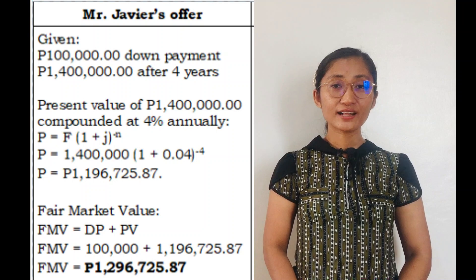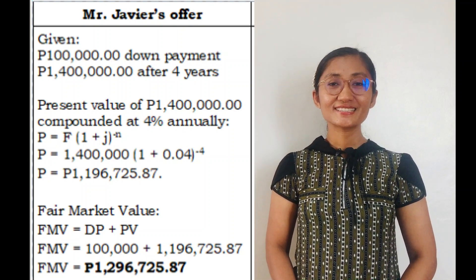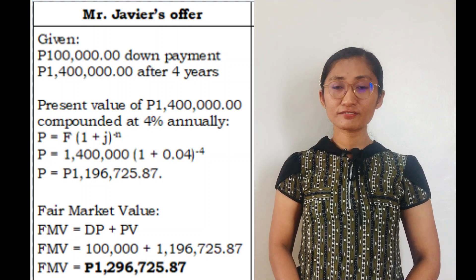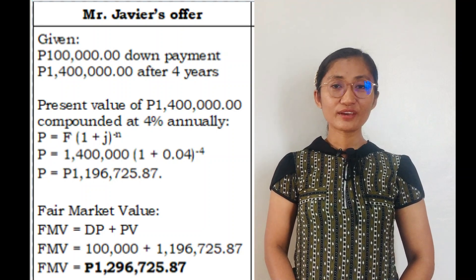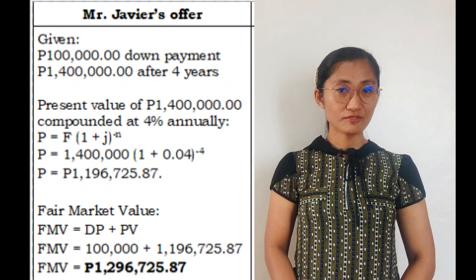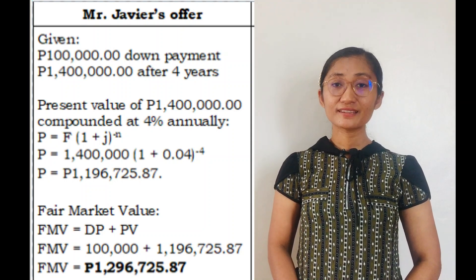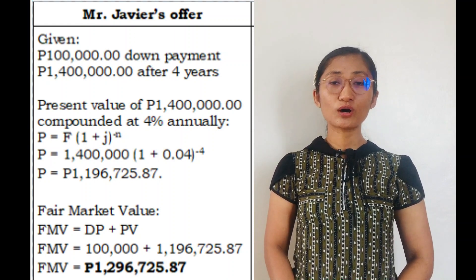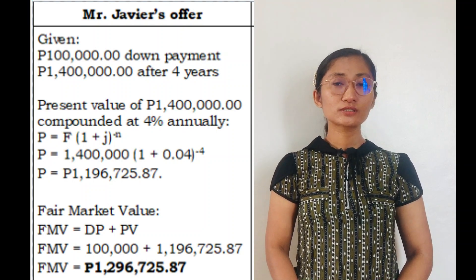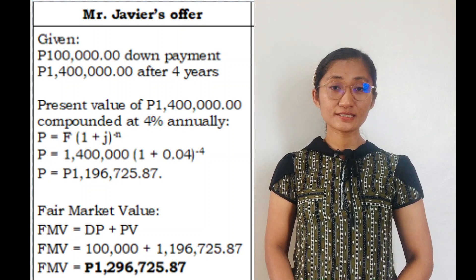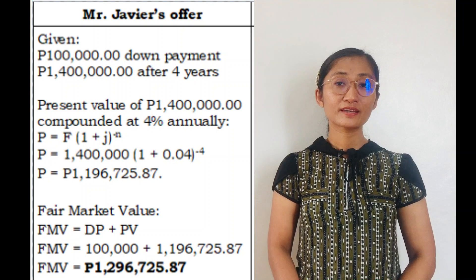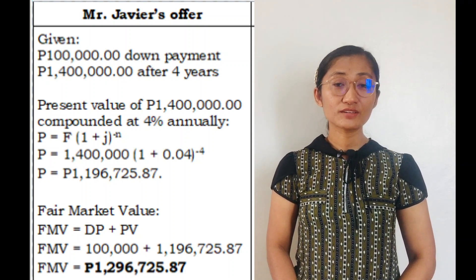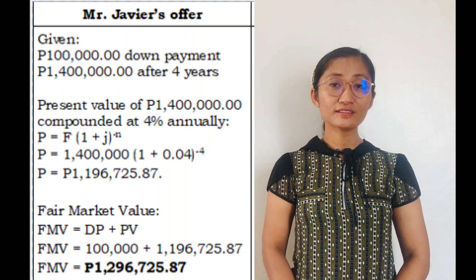The value of P is ₱1,196,725.87 — that's the present value of ₱1,400,000. Hence, to get the fair market value of Mr. Javier's offer, we use the formula FMV equals DP plus PV, where DP is the down payment and PV is the present value. By substitution, the down payment is ₱100,000 plus the present value of ₱1,196,725.87, giving a fair market value of ₱1,296,725.87.